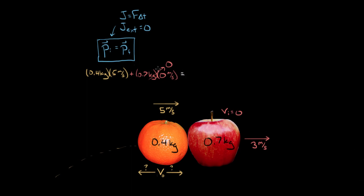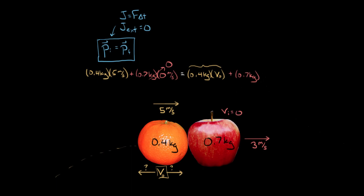That equals the final momentum. We add up all the momentum of our system finally: 0.4 kg times VO — the unknown final velocity of the orange — plus the final momentum of the apple. Remember, conservation of momentum says the total initial momentum of the entire system equals the total final momentum of the entire system. So we add 0.7 kg multiplied by three meters per second for the apple.